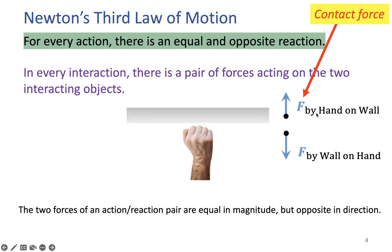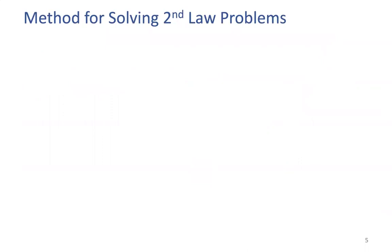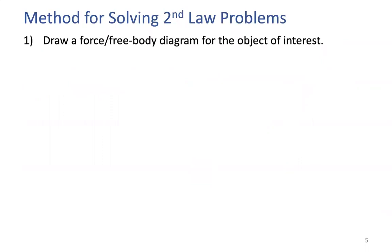When we have these action-reaction pairs, they are equal in magnitude — same length in the arrow — but arrowheads are opposite in direction. So all three Newton's laws are considered. Now, when we consider applying Newton's second law problems, remember: we must draw a force diagram or a free body diagram, considering all the forces that could act on the object or objects of interest.